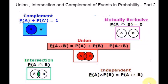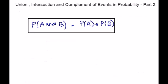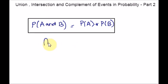Let us first see the formula for intersection of events. Consider A and B are two events of a random experiment. The intersection of A and B is represented by A intersection B, or you can simply say A and B — and an intersection symbol are the same. The probability of the intersection of events A and B is given by P(A ∩ B) = P(A) times P(B).